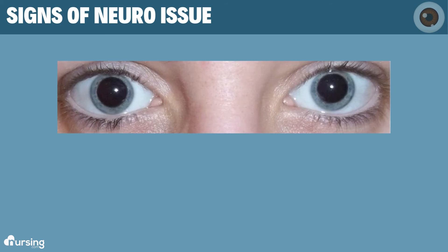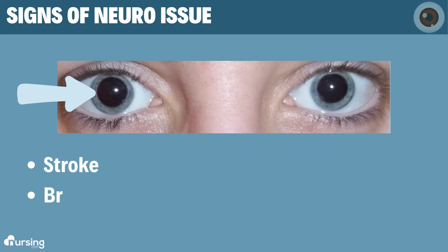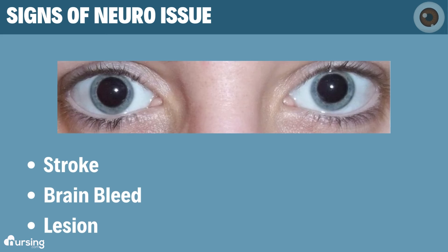If one pupil is blown, like in this image, the patient may have a stroke, a bleed on the brain, or a lesion on that side of the brain. Any pupils that are fixed and dilated like this are a definite sign of a neurological problem.